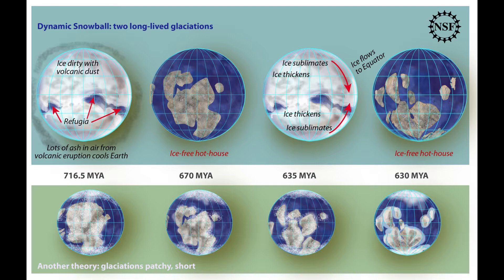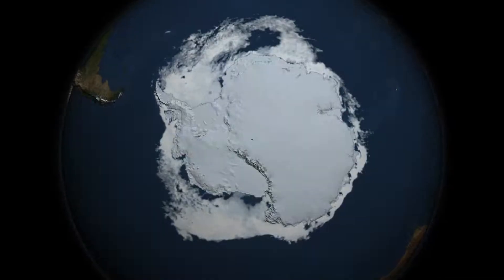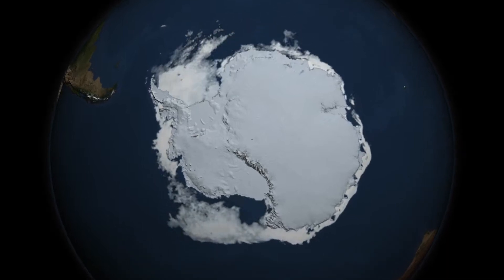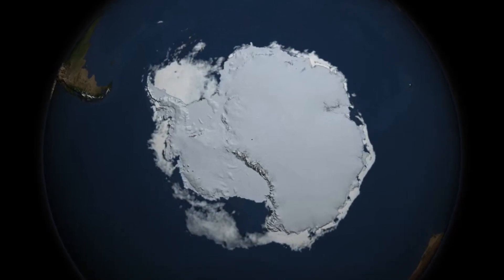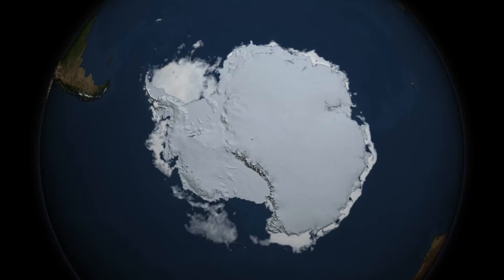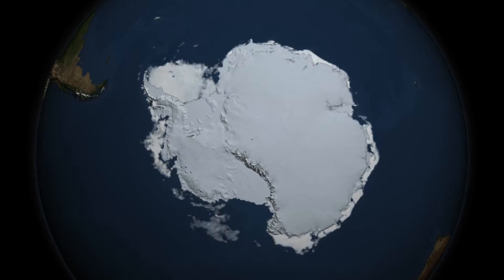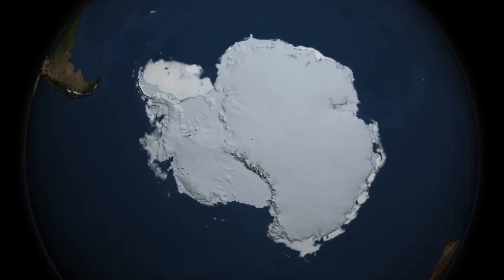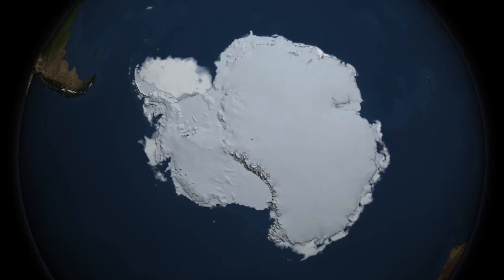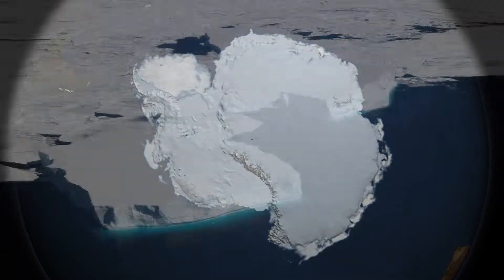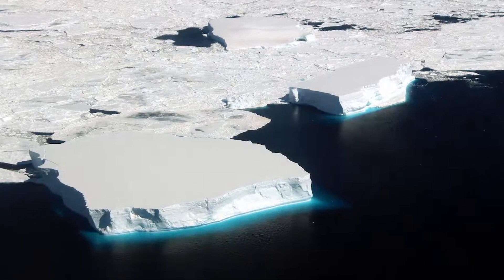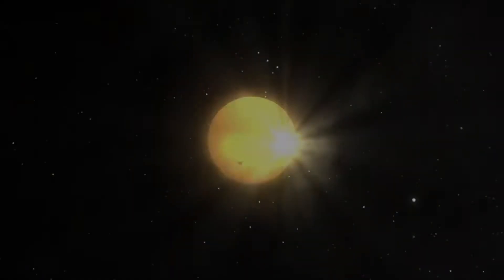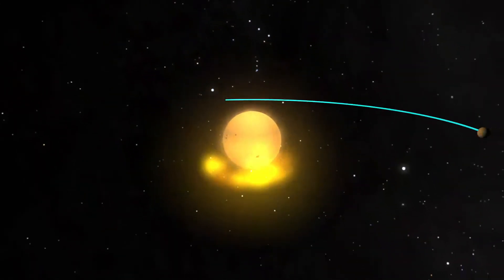So what controls these periods of severe glaciation and greenhouse periods in between? Although you might think there is one single factor, it is actually not that simple. Like everything in our solar system, many factors in combination affect the extent of glaciation at any particular time.